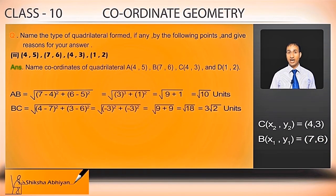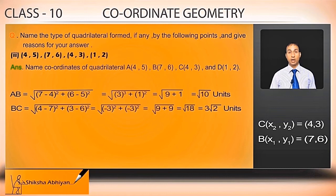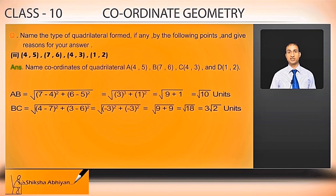Distance BC: taking C(4,3) as (x2,y2) and B(7,6) as (x1,y1), under root of (4 minus 7) squared plus (3 minus 6) squared. Now 4 minus 7 is minus 3, and 3 minus 6 is also minus 3. Minus 3 whole square is plus 9, and plus 9, giving root 18 equal to 3 root 2 units.